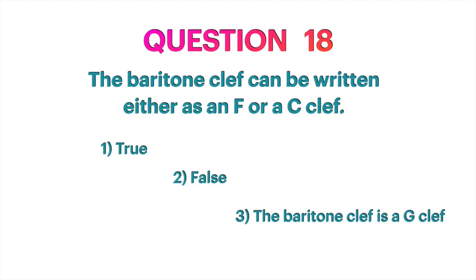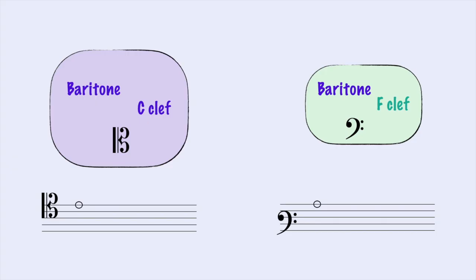Question 18: The baritone clef can be written either as an F or a C clef. The baritone clef has two symbols: one is the C clef symbol and the other is the F clef symbol. One of them is easier to read, so it's a little bit more frequent in scores.